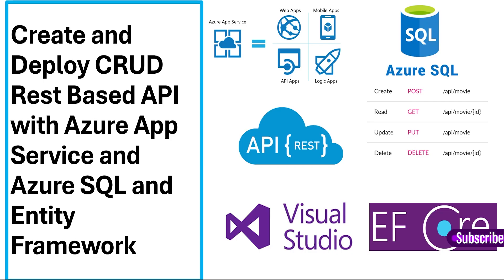In this process we are going to use Visual Studio for creation of the project and also deploy this REST-based API using Visual Studio to Azure App Services. We are going to leverage Entity Framework to connect to the database and do operations, exposing HTTP POST, GET, PUT, and DELETE — which is Create, Read, Update, Delete — on a Movie model which we will create as a table inside the database.